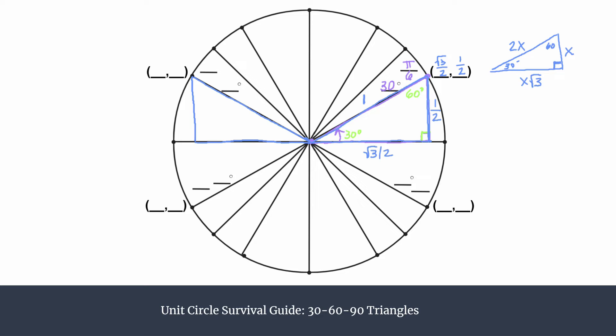So instead of having root 3 over 2, 1 half, we know that we're just going in the negative direction, but it's still that distance of root 3 over 2. So we can label the x-coordinate negative root 3 over 2, and the y-coordinate is still equal to the short leg 1 half.